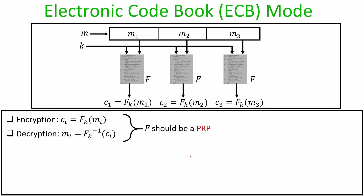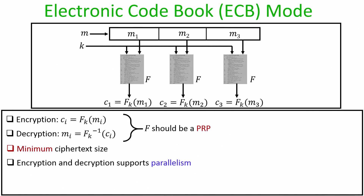The function f must be a keyed pseudo random permutation — not a many-to-one function — otherwise decryption becomes ambiguous. Notably, the ciphertext size is exactly the same as the message size: if the message has three blocks of l bits, so does the ciphertext. Moreover, ECB supports parallelism: c1, c2, and c3 can each be computed independently, both for encryption and decryption.